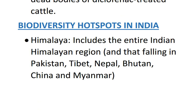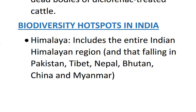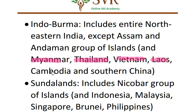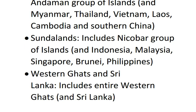Now we are going to discuss about hotspots in India. One is the Himalayas, which includes the entire Indian Himalayan region falling in Pakistan, Tibet, Nepal, Bhutan, China, and Myanmar. Second is Indo-Burma, which includes the entire northeastern region except Assam and Andaman Nicobar Islands, and parts of Myanmar, Thailand, Vietnam, Laos, Cambodia, and southern China. Third is Sundalands, which includes the Nicobar group of islands and also Indonesia, Malaysia, Singapore, Brunei, and Philippines. Fourth is Western Ghats and Sri Lanka.